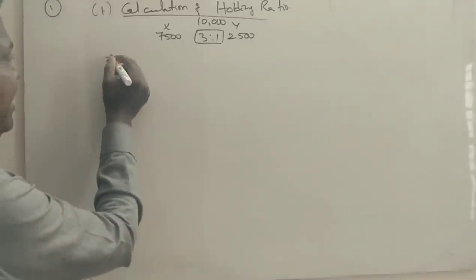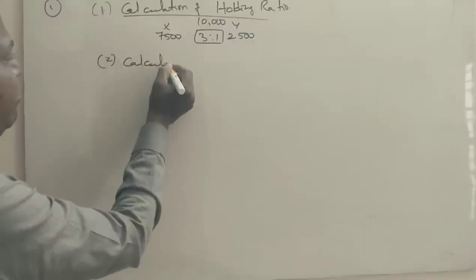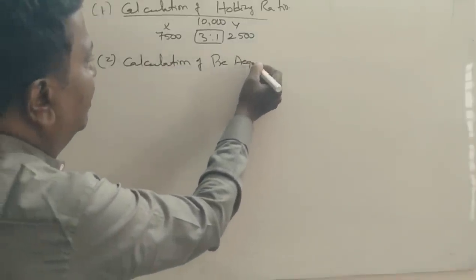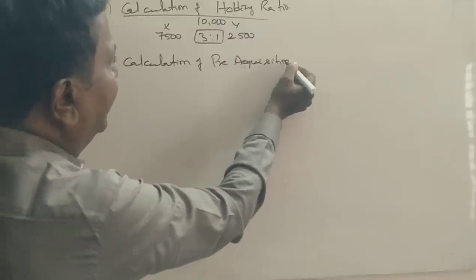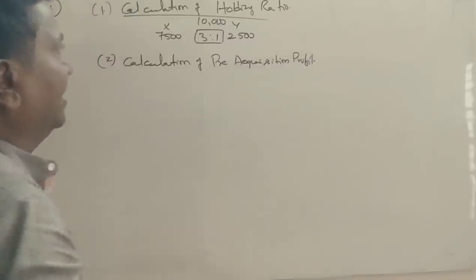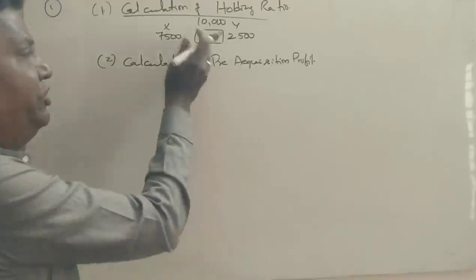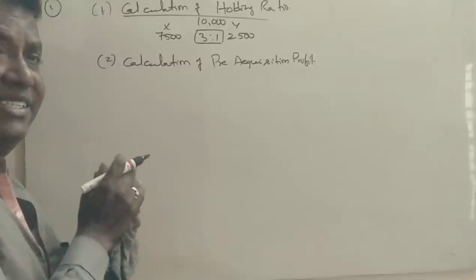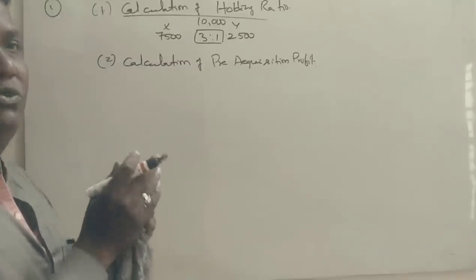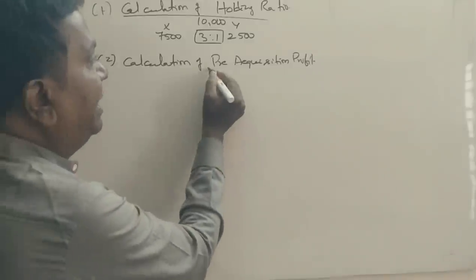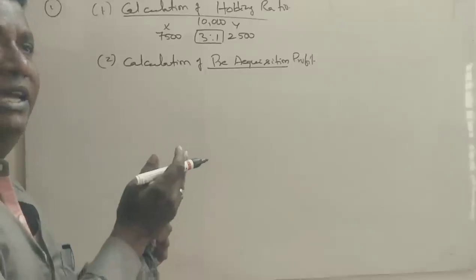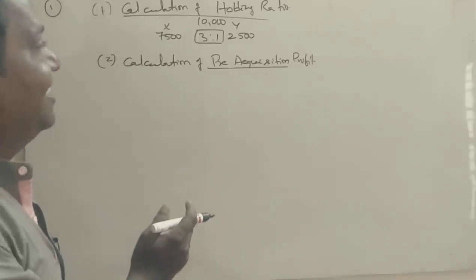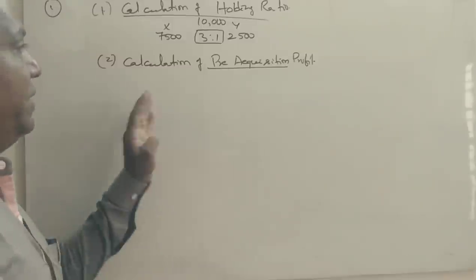The second step is the calculation of pre-acquisition profit. Pre-acquisition profit is the case where Y company shares — the majority shares — are purchased by X company. This involves X company and Y company profits prior to the acquisition date.